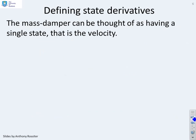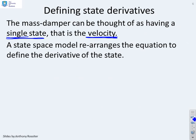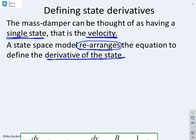The mass-damper can be thought of as having a single state. We're going to choose that state to be velocity. You can see why I've chosen velocity, because that was what was in the equation. For a state space model, we simply—and this is the key word—we're going to rearrange the equation so that we give a focus on the derivative of the state. What is the derivative of the state? And I've decided that the state is velocity.